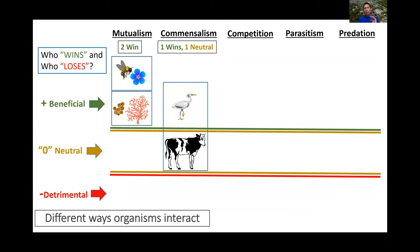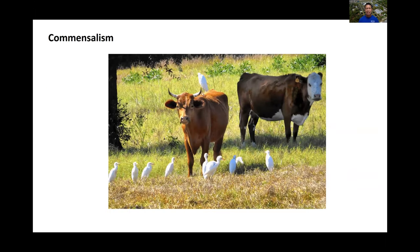Let's talk about commensalism. In commensalism, one organism is winning and the other is neutral — not winning or losing. A popular example everyone knows is cattle egrets. Cattle egrets and cattle are all over Florida. When cattle graze and disturb the substrate or grass, insects and other things start moving around, and the cattle egrets feed on those disrupted creatures. The cattle egrets are getting food, but the cattle isn't affected one way or another. That's a commensal relationship — the cattle is neutral and the cattle egret is the beneficiary.